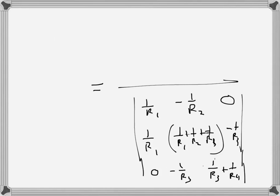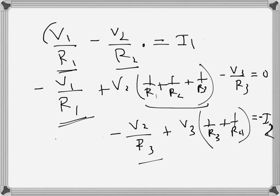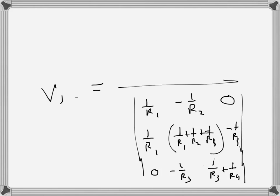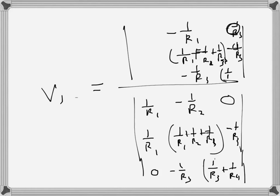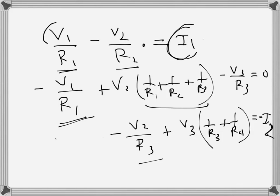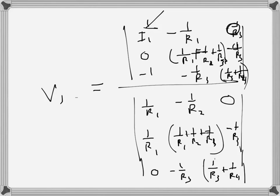This denominator determinant is common for all unknowns. For the numerator when solving V1, the first column is replaced by the right hand sides of all three equations: I1, 0, and negative I2. The second and third columns remain the same as in the denominator.